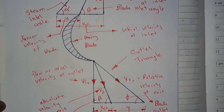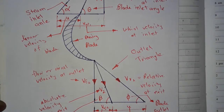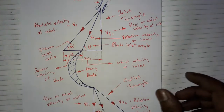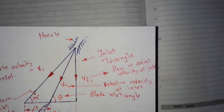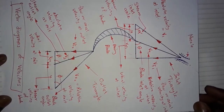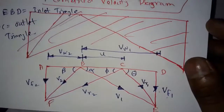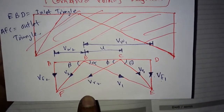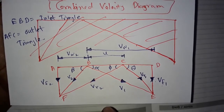Hello friends, welcome. In this video we will see analysis of impulse turbine velocity vector diagrams. Here it is a combined velocity diagram of both outlet and inlet velocity triangles. Based on those diagrams we will see the important formulas of impulse turbine velocity vector diagrams.